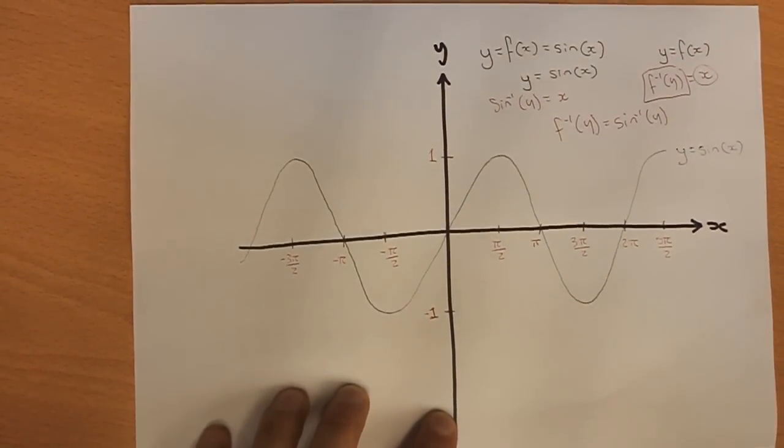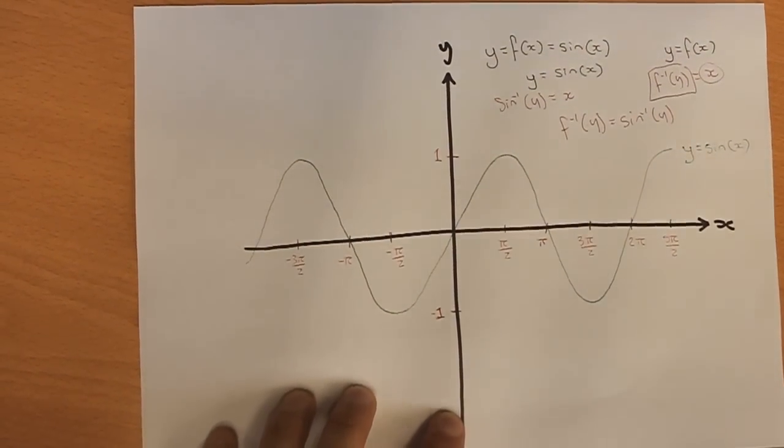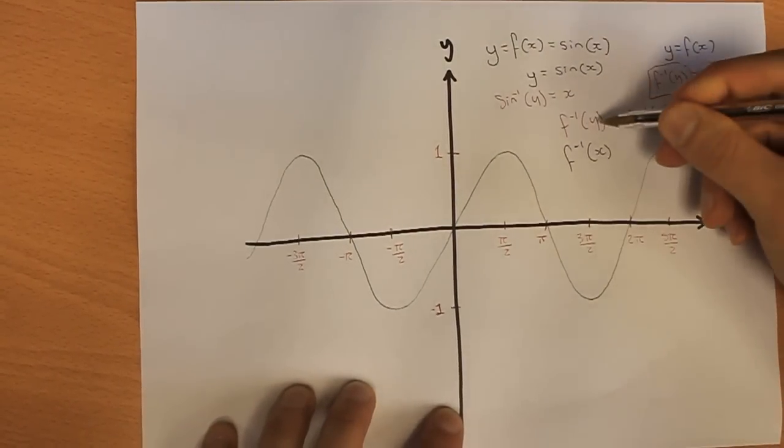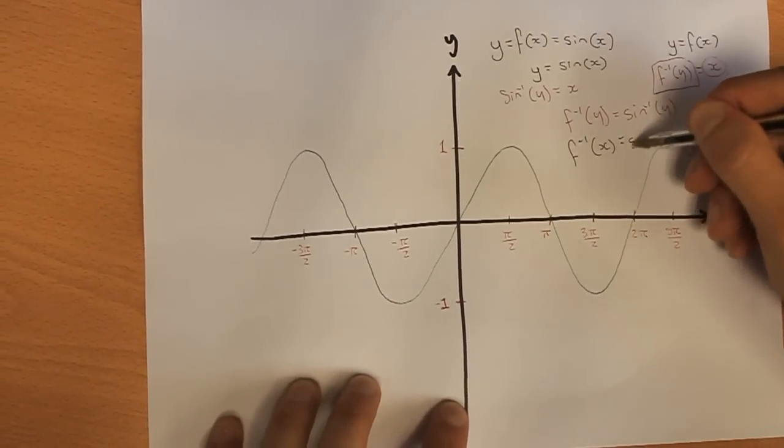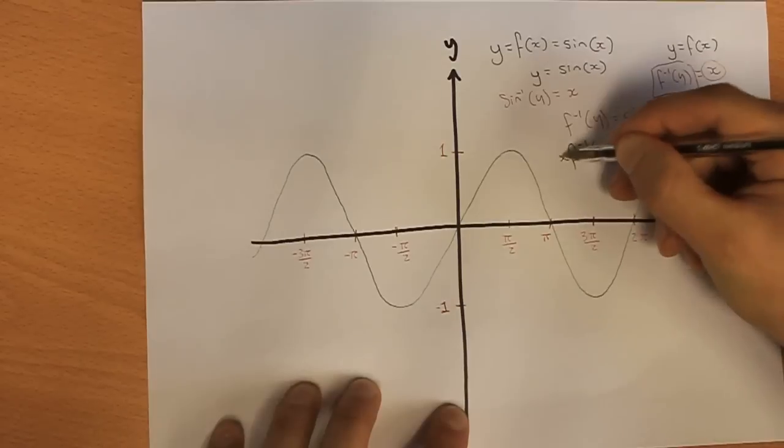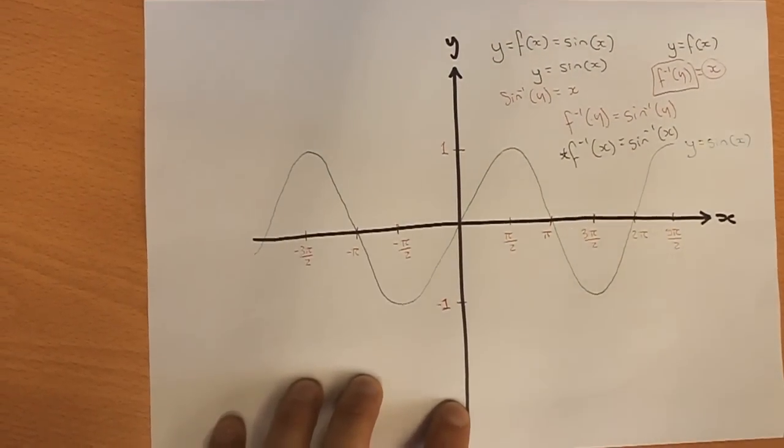But if we want it as an individual function on its own, what we're going to do is put the input in, which is x. So if we do f to minus 1 of x, that's going to be sine to minus 1 of x, which is a graph that we're going to draw.